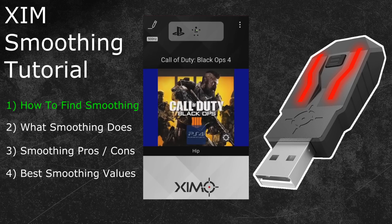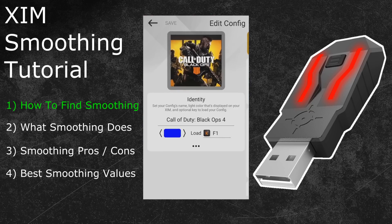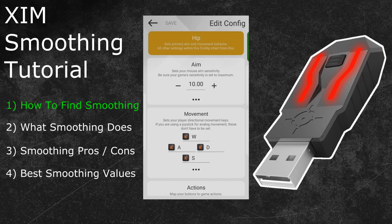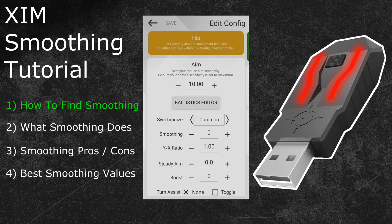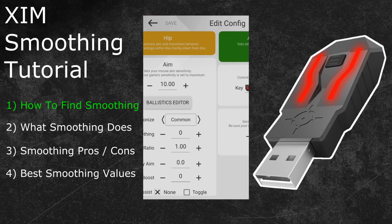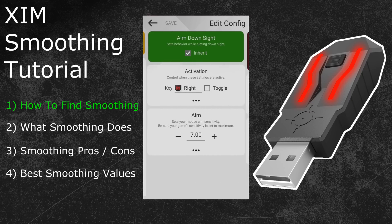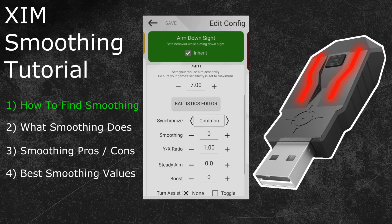Click on the edit button in the top left of your ZIM manager to enter the configuration mode of your current game profile. After that, swipe one time to the right to enter the hip menu. The smoothing feature is part of the advanced sensitivity options — press the button with the three dots below your hip sensitivity to expand these settings. You can now find the smoothing feature near the top of the advanced settings. To find it in your aim down sights configuration, swipe one more time to the right and expand the advanced settings again by clicking on the button with the three dots. The smoothing option will be below the synchronization feature.